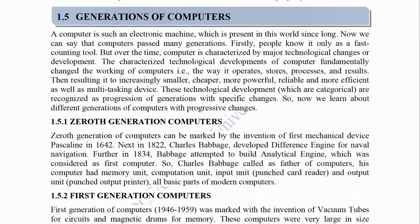Computers have existed in this world since long and have passed through many generations. Originally known only as a fast counting tool, over time the computer was characterized by major technological changes and development. These changes fundamentally altered the way computers work, operate, store, process, and produce results — resulting in devices that are increasingly smaller, cheaper, more powerful, reliable, efficient, and multitasking. These technological developments are recognized as a progression of generations with specific changes.